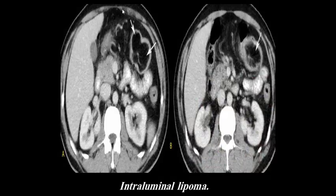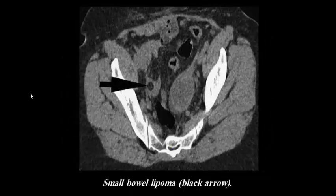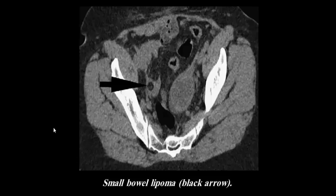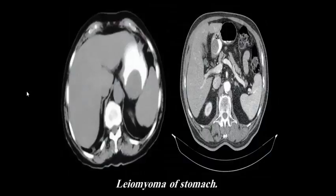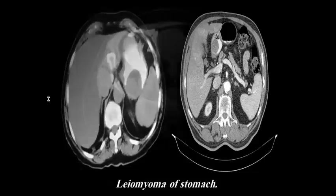Intraluminal lipoma is seen as a low attenuation, low density mass. Another example shows small bowel lipoma in the wall of the small bowel. A Schwannoma of the stomach presents as a mass arising from the wall of the stomach, exophytic to the outside, with homogeneous contrast enhancement and high attenuation. Another Schwannoma of the stomach shows a mass with low or iso-attenuation within the wall of the stomach, with focal lobular thickening — this is a lipoma of the stomach.